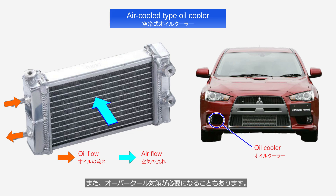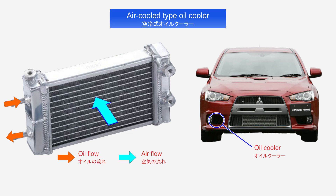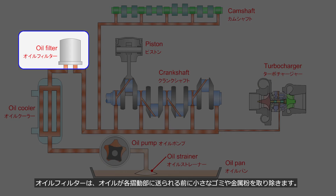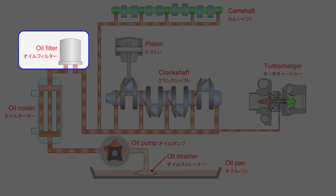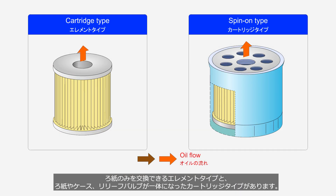In some cases, measures to prevent overcooling are necessary since the air cooled type needs to be exposed to airflow, limiting its installation location. The oil filter removes small debris and metal particles from the oil before it is delivered to moving parts. There are two types of oil filters: the cartridge type, where only the filter paper can be replaced, and the spin-on type, which integrates the filter paper, outer case, and relief valve into a unit.